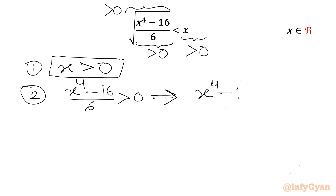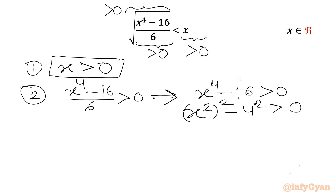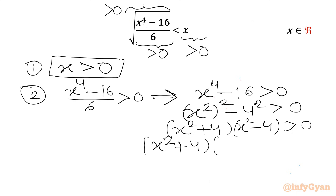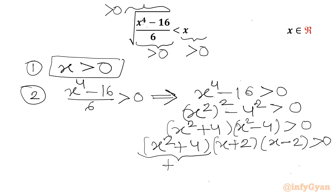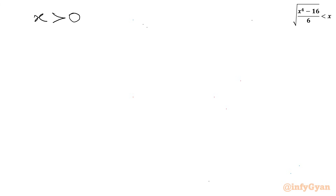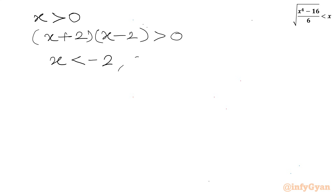Let us solve the second inequality. We write x⁴ minus 16 > 0, which factors as (x² + 4)(x² - 4) > 0, or (x² + 4)(x + 2)(x - 2) > 0. Now x² + 4 is always positive, so we only need (x + 2)(x - 2) > 0, which gives x < -2 or x > 2.